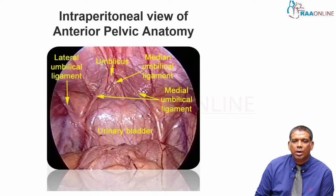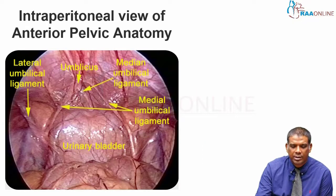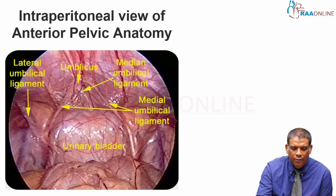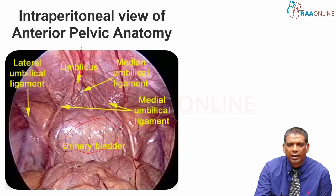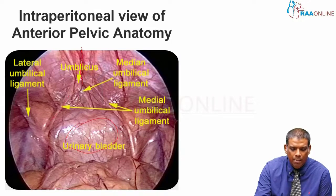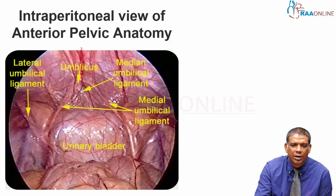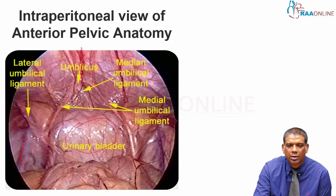When you do a transabdominal preperitoneal approach, this is the view you will get when you enter the abdomen. You will find that the urinary bladder is right there. You have the median umbilical ligament, then the two medial umbilical ligaments, and then the lateral umbilical ligament, which will naturally carry the inferior epigastric vessels. Notice that there is a large structure here which we will return to shortly.